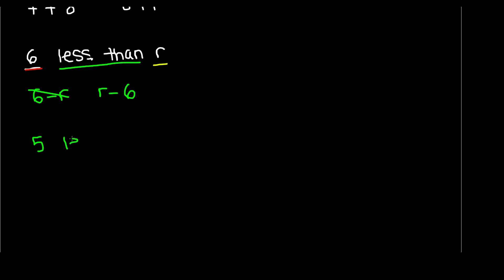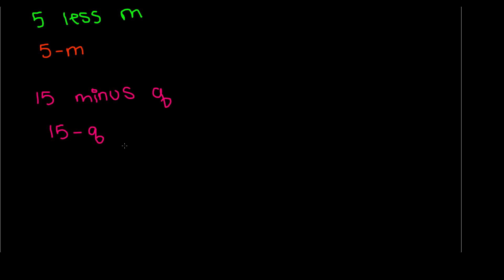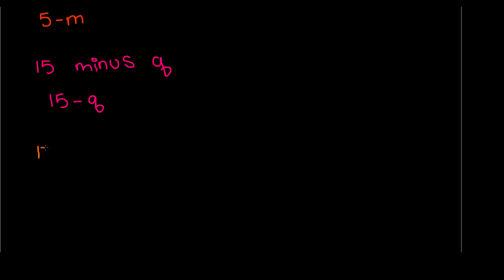We can also see subtraction written other ways. For '5 less m', this will be 5 minus m, because it says 5 and then less m. Another way is '15 minus q', which is written as 15 minus q — we have 15 and we are subtracting q. And if we have '17 subtracted from p', this will not be 17 minus p; it's going to be p minus 17, because 17 is being subtracted or taken away from the variable p.